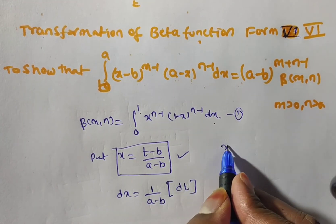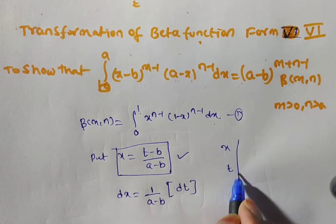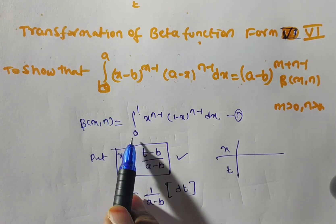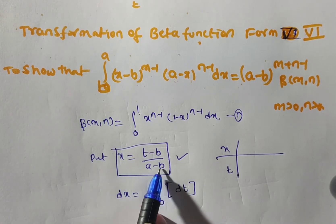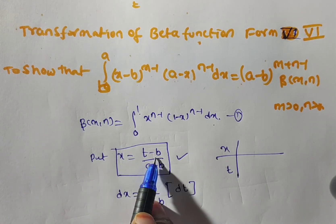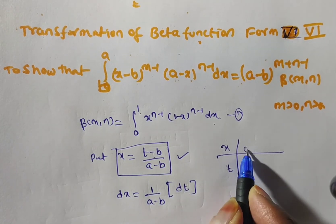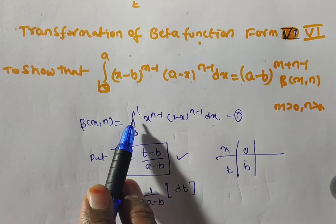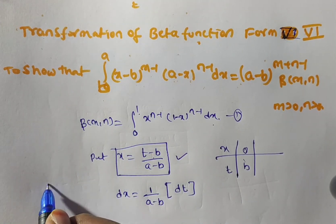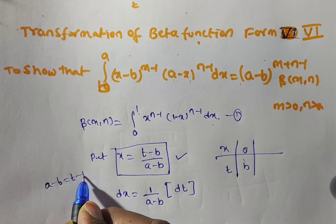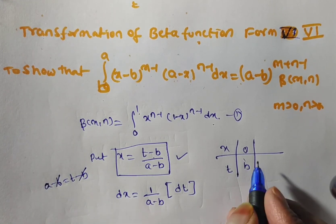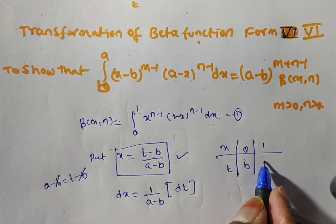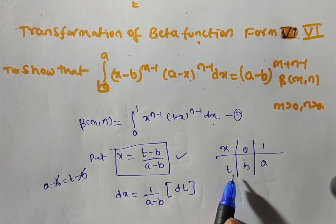Now I want the limits. From the x limits, I want the limits of t. The x limits are 0 and 1. If you put x equal to 0, then t minus b equals 0, so t equals b. Whenever x is 0, t is b. Now put x equal to 1 (the upper limit): then a minus b equals t minus b, so minus b cancels on both sides, giving t equal to a. So the lower limit is b and the upper limit is a.